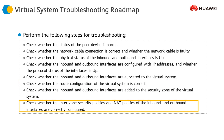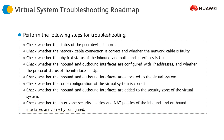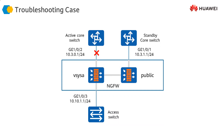Check whether the interzone security policies and NAT policies are properly configured on the firewall. These are the standard troubleshooting steps for any firewall scenario, and they apply to virtual systems as well — except that you also have to check the interface allocation and resource allocations to the specific virtual system.